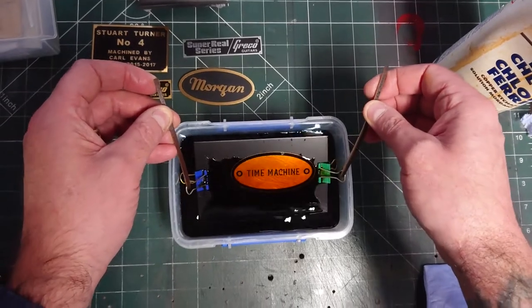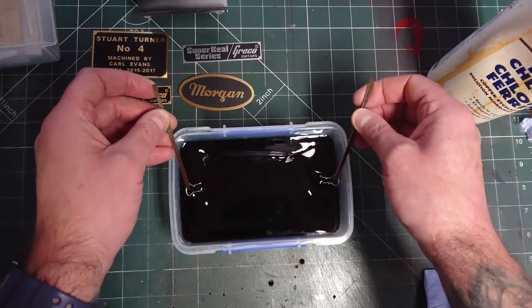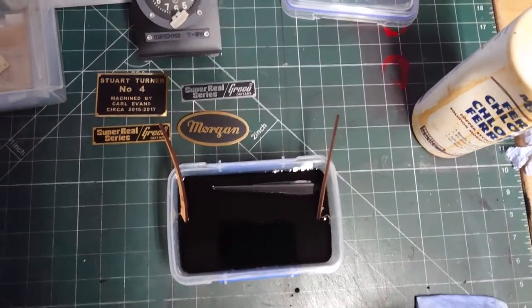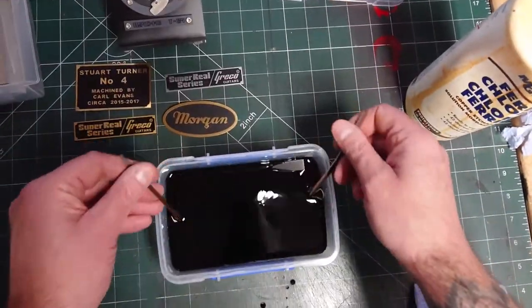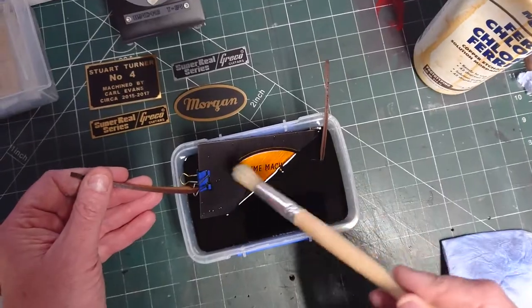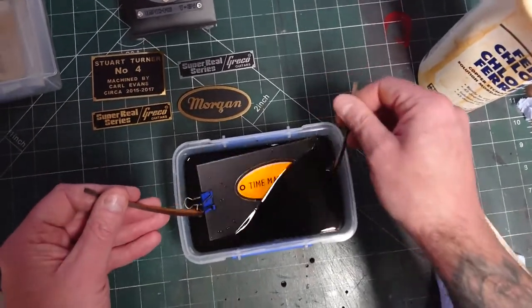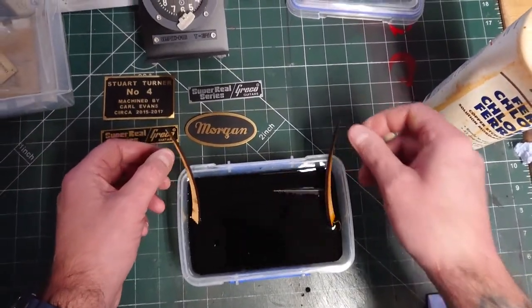So that ferric chloride will start eating into that copper. Depending on the hardness of the metal depends on how long it takes, but we'll come back from time to time, we'll check the time. And as it goes through the process I just gently brush the area that's been etched. So right, we'll come back in a couple of hours and see how that's going on. Cheers folks, see you in a bit.